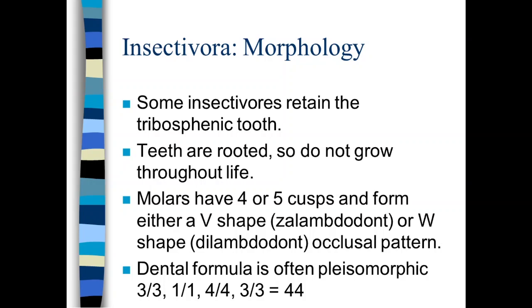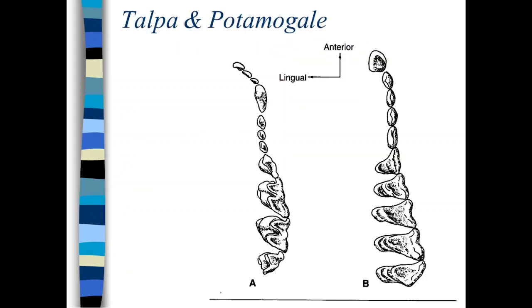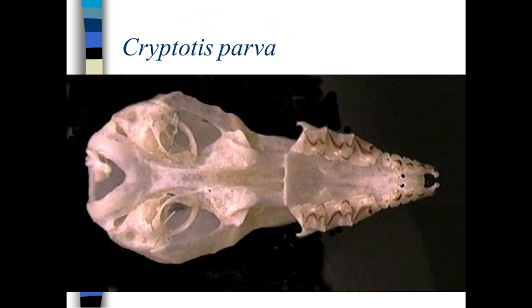The dental formula is plesiomorphic, so a total of 44 teeth. And notice that the number of incisors is different from what you get in marsupials. In marsupials, if they are a polyprotodont, then they have more than the three upper and three lower incisors. But here you can see what the tooth rows look like in a Talpa and Potamogale. So you have both the zalambdodont and dilambdodont dentitions there.